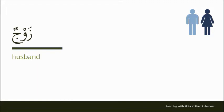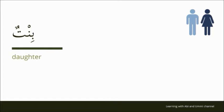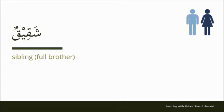Zawjdun, husband. Abdun, father. Ummun, mother. Ibnun, son. Bintun, daughter. Akhun, brother. Ukhtun, sister. Shaqiqun, sibling — meaning full brother. Shaqiqatun, sibling — meaning full sister.